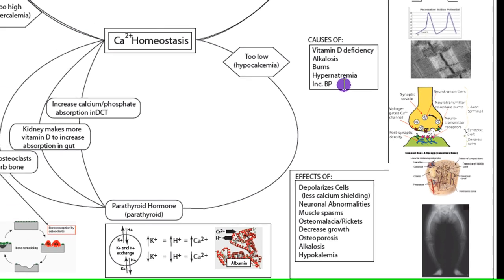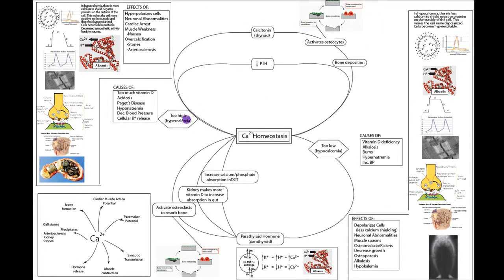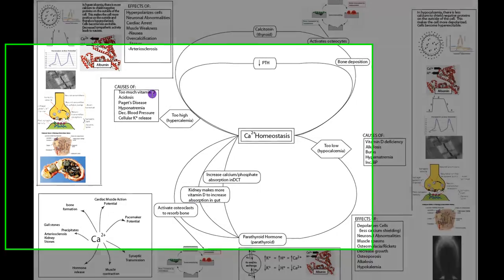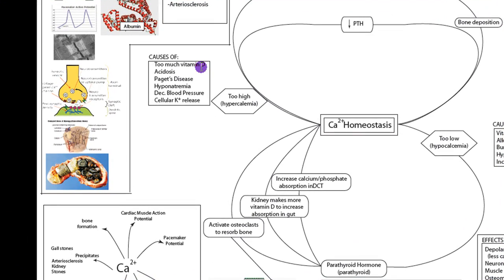Turning to hypercalcemia, we can assume that imbalance of vitamin D can also lead to hypercalcemia — too much vitamin D can cause it. Acidosis is the opposite of alkalosis, so acidosis and anything that leads to acidosis, like tissue damage, can also lead to hypercalcemia.